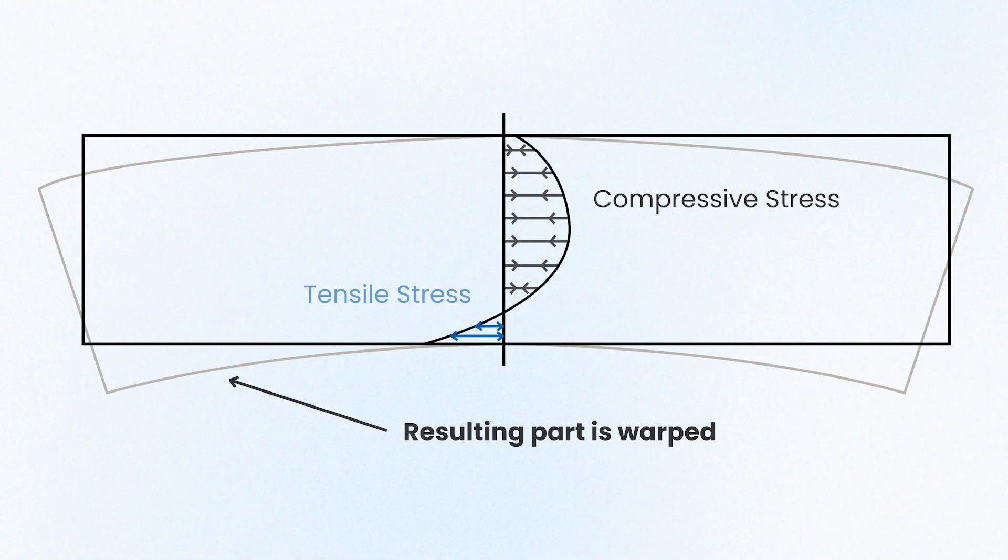This can also cause issues with the workholding of parts as the warping of the parts provide uneven surfaces to hold onto and therefore the part will have to be forced into shape to be held. If you specify a specific flatness tolerance on your design and we identify that any of the factors that we've discussed in this video will cause us to not meet your flatness specification, we're likely going to ask you about it.